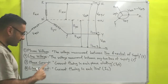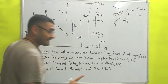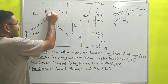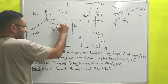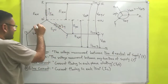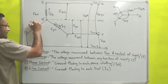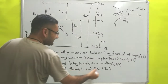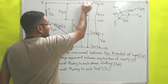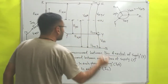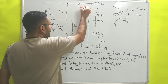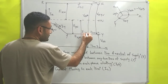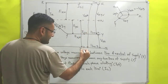Next is phase current: the current flowing in each phase winding. So current flowing in R-phase winding is I-R, in Y-phase winding is I-Y, and in B-phase winding is I-B. Line current is the current flowing in each line, denoted by I-L. So in line 1 it is I-L1, in line 2 it is I-L2, and in line 3 it is I-L3.